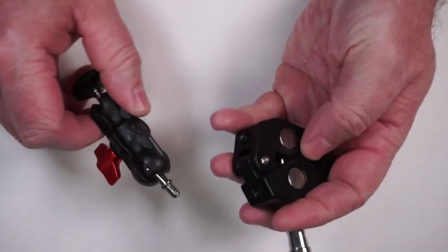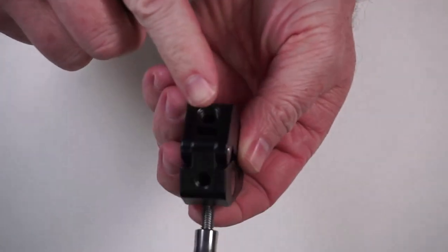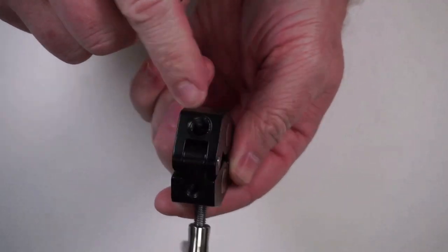These are the two parts that come in the box. You've got this end that attaches to your pole, and you can see it has both sizes of threads.